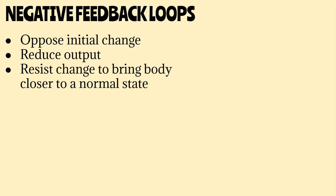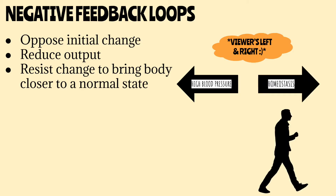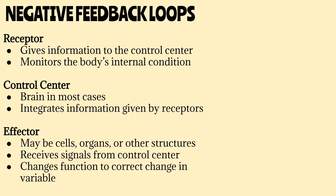Maybe this depiction will help. If the change in variable is to the left, negative feedback is going to travel in the opposite direction — to the right — to reach homeostasis. Every negative feedback loop requires three main components: a receptor, a control center, and an effector. The receptor functions to relay messages to the control center and to monitor the body's internal condition. The control center receives information about the change in variable from the receptor and regulates the output of the effector. The control center is most likely to be cells in the brain or an endocrine gland. The effector is going to cause the physiological response to the change in variable. The effector can be a cell or an organ.